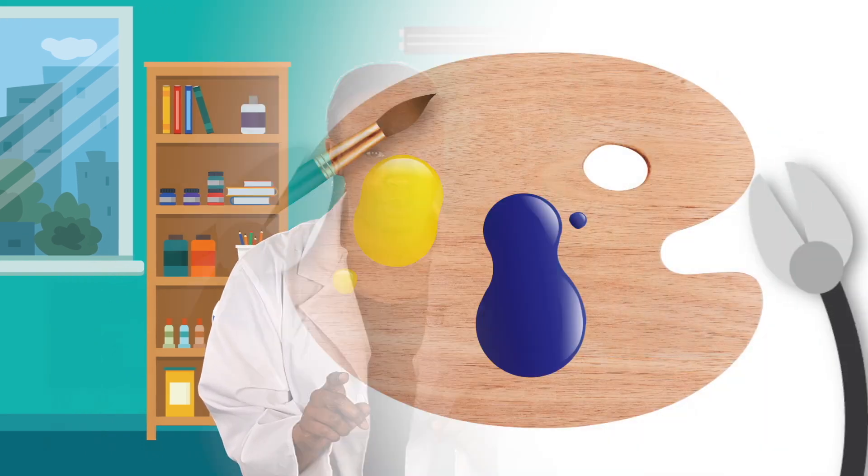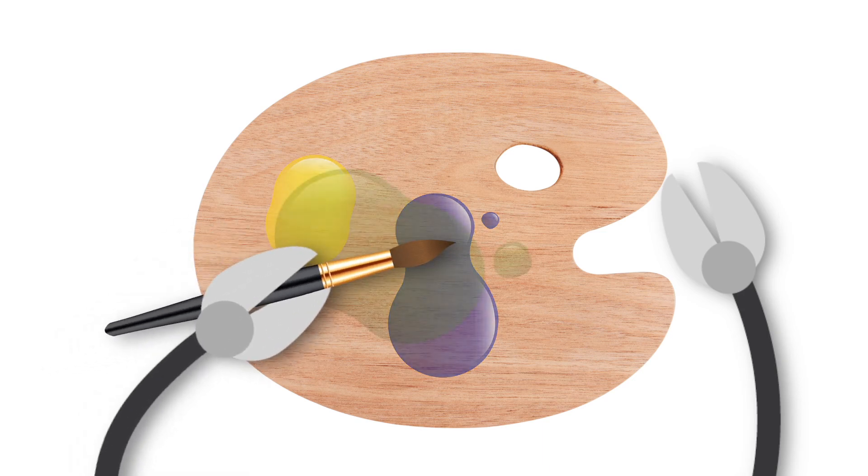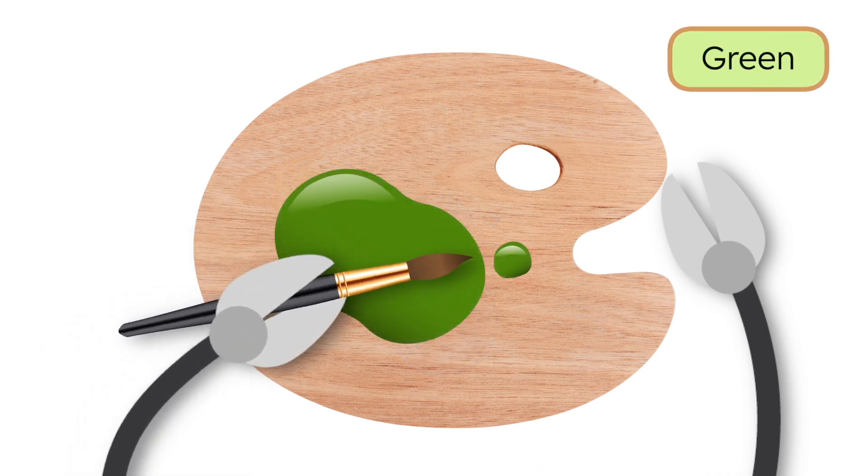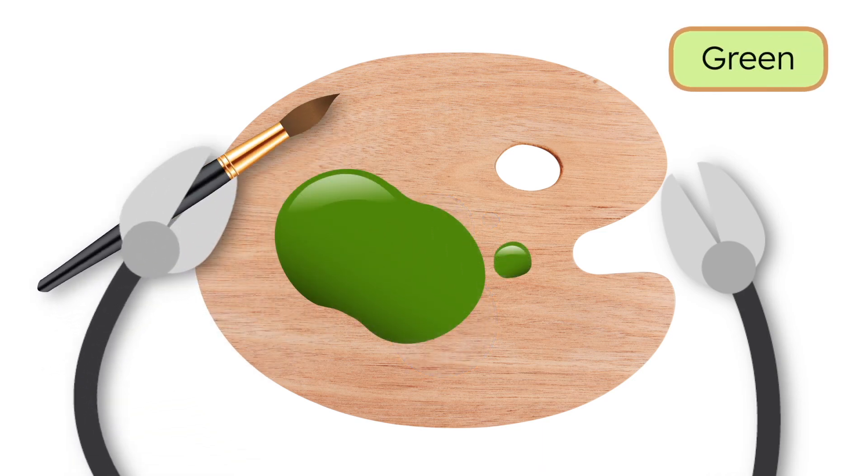What's next? Hmm. How about yellow and blue? What do you think might happen when Mia mixes those two? Wow! Yellow and blue make green! Perfect for the trees and grass in my nature scene.